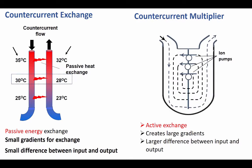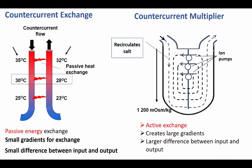On the other hand, we have a much more complex mechanism referred to as a countercurrent multiplier. The big difference is that the transfer of energy is going to be active. For example, to have countercurrent multiplication of ion concentrations, you need pumps to pump ions from one tubule into another. The continual pumping and recirculation of salts will cause large gradients, much larger than those possible with a countercurrent exchange mechanism.